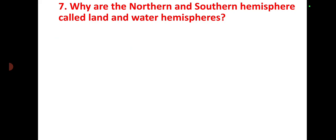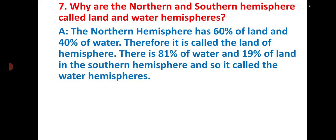Why are the northern and southern hemispheres called land and water hemispheres? The northern hemisphere has 60% land and 40% water, therefore it is called the land hemisphere. There is 81% water and 19% land in the southern hemisphere, so it is called the water hemisphere.